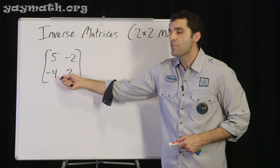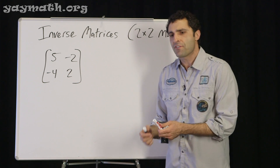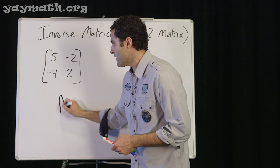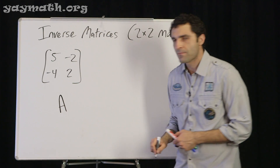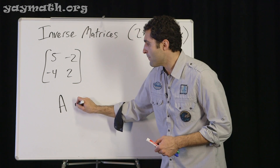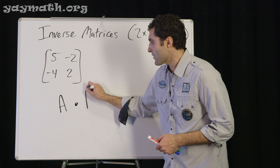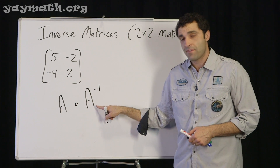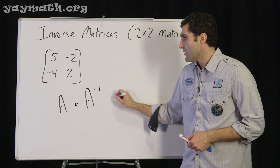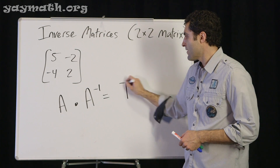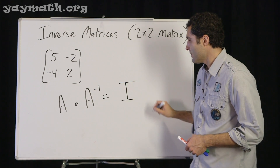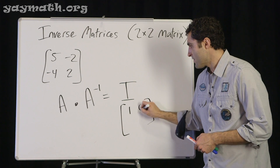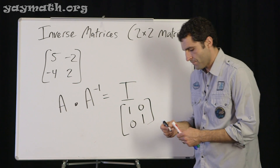Here is a two by two, so let's define what inverse means. If you have a matrix, call it A, and then you multiply it by its inverse — this is the notation for inverse — then it results in the identity matrix, meaning 1, 0, 0, 1.